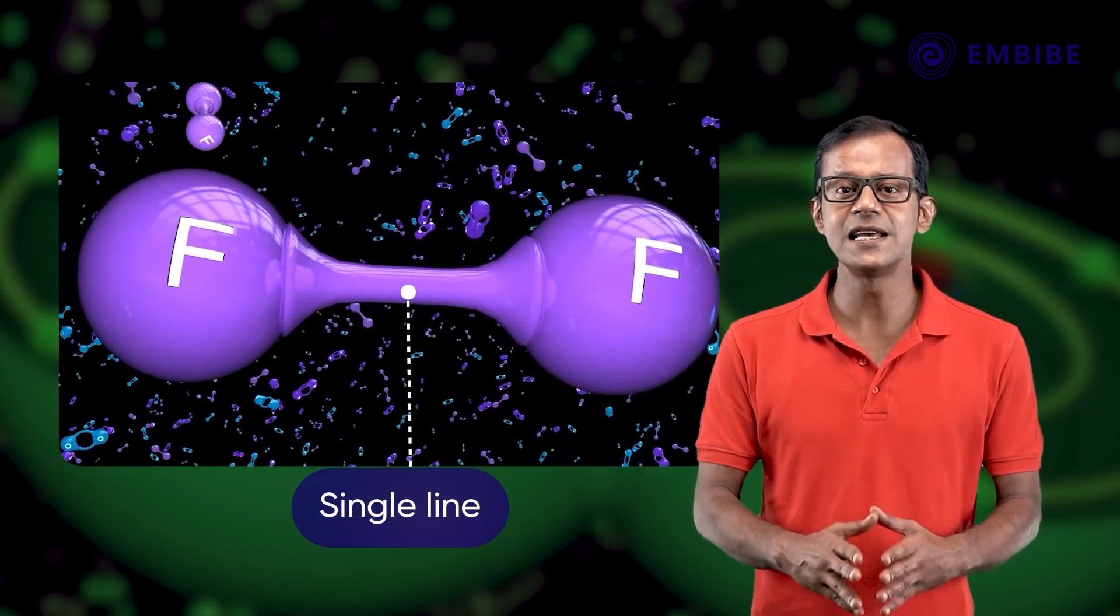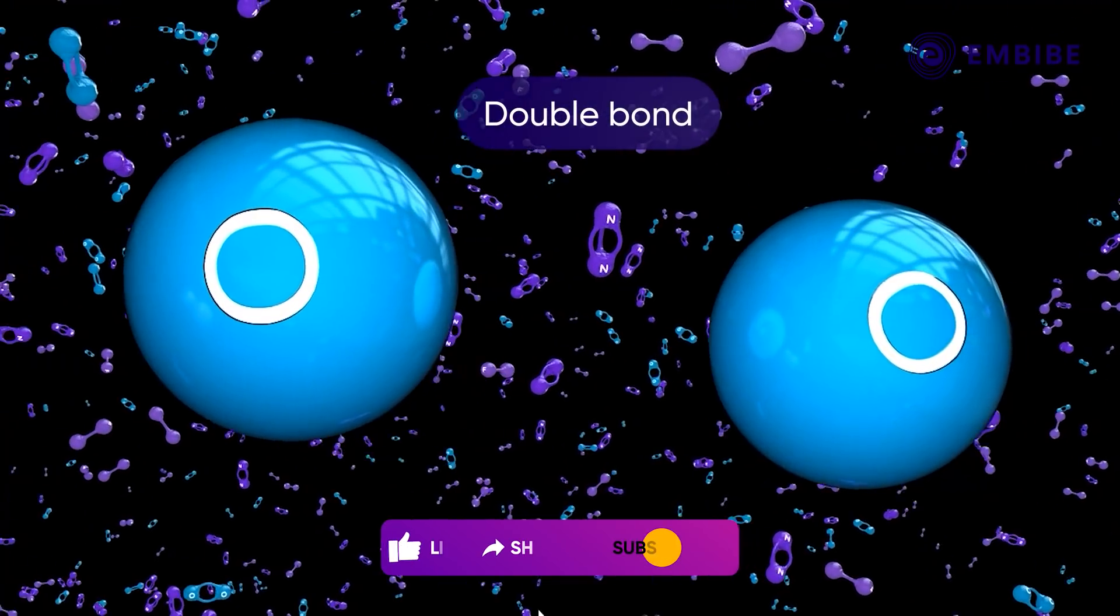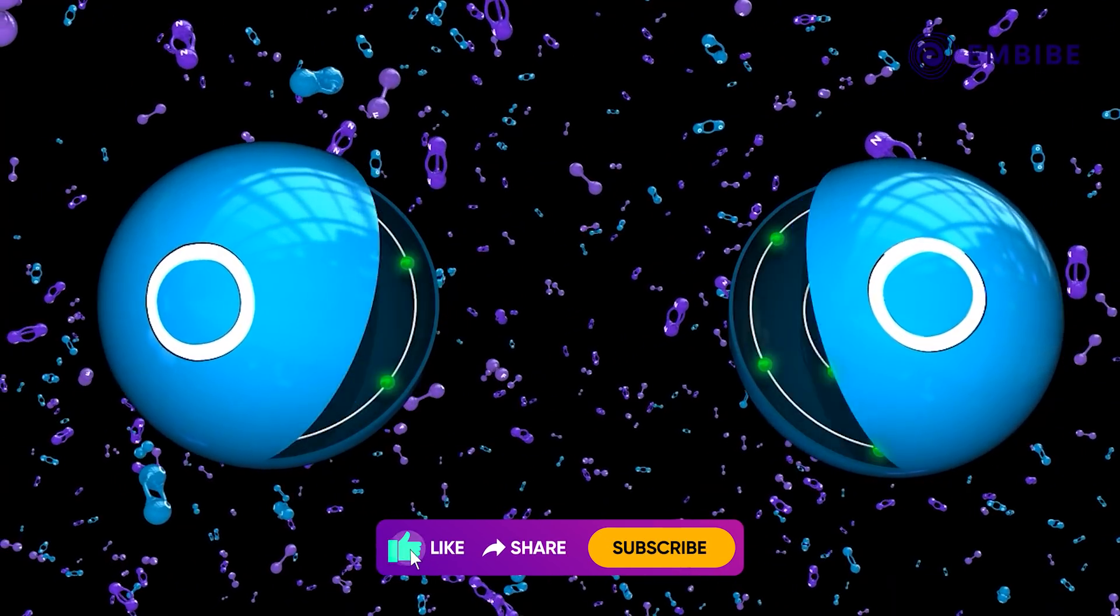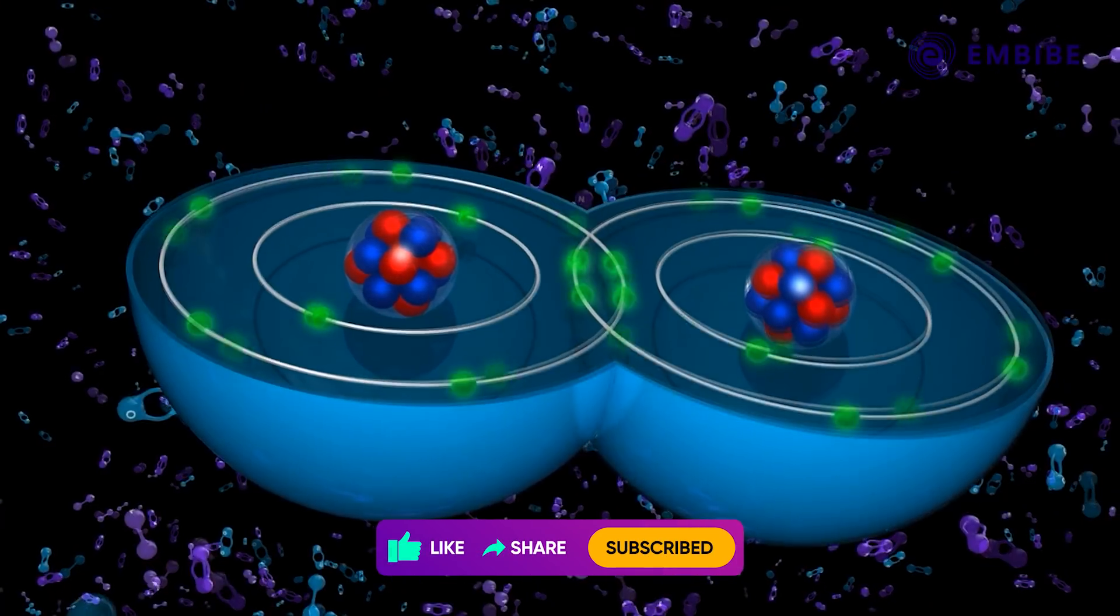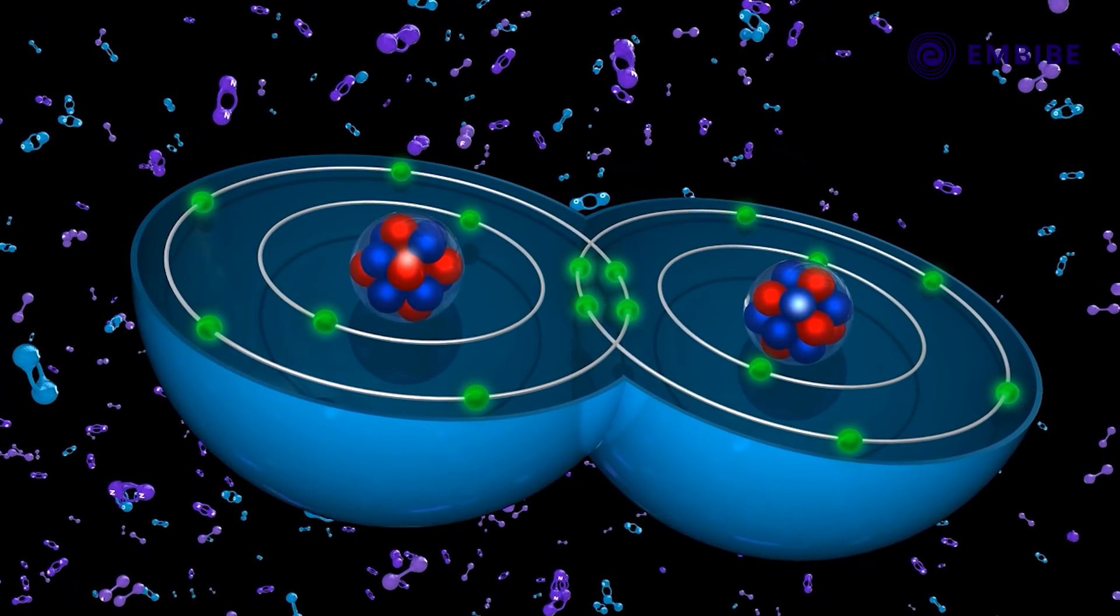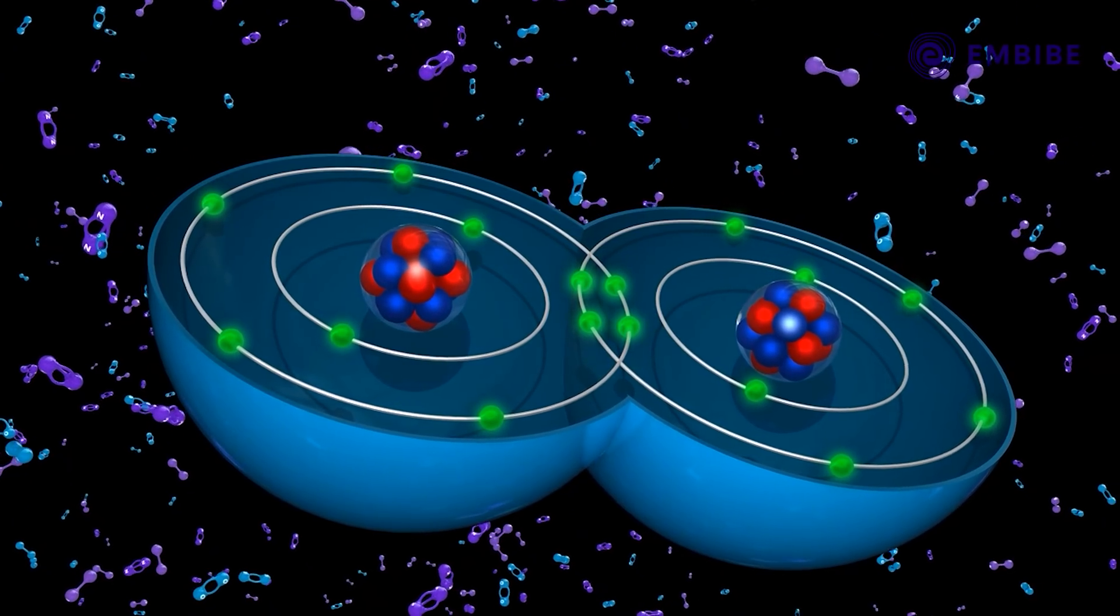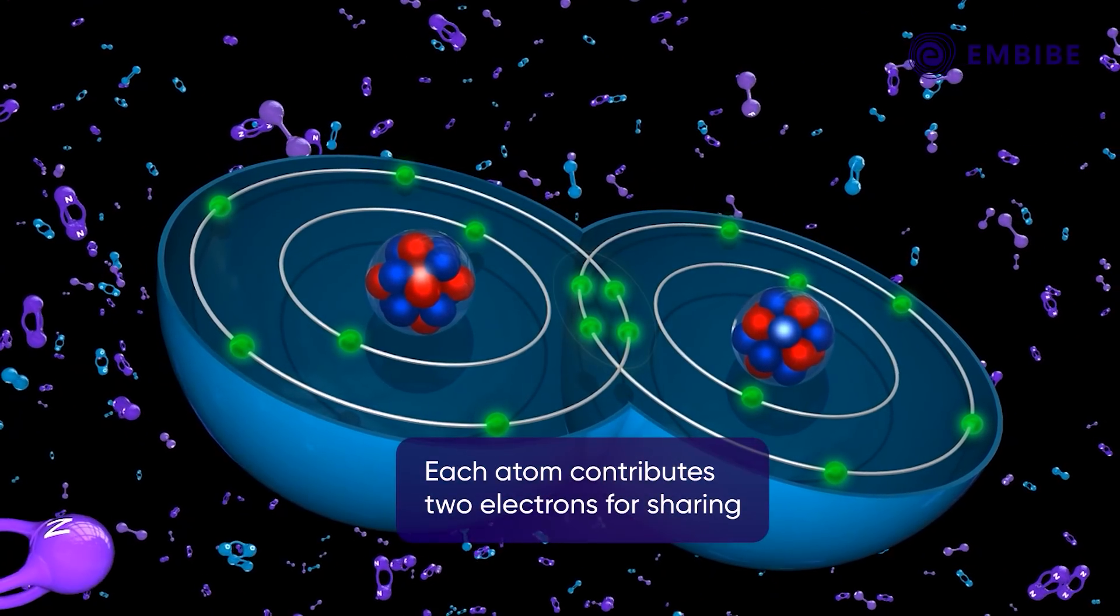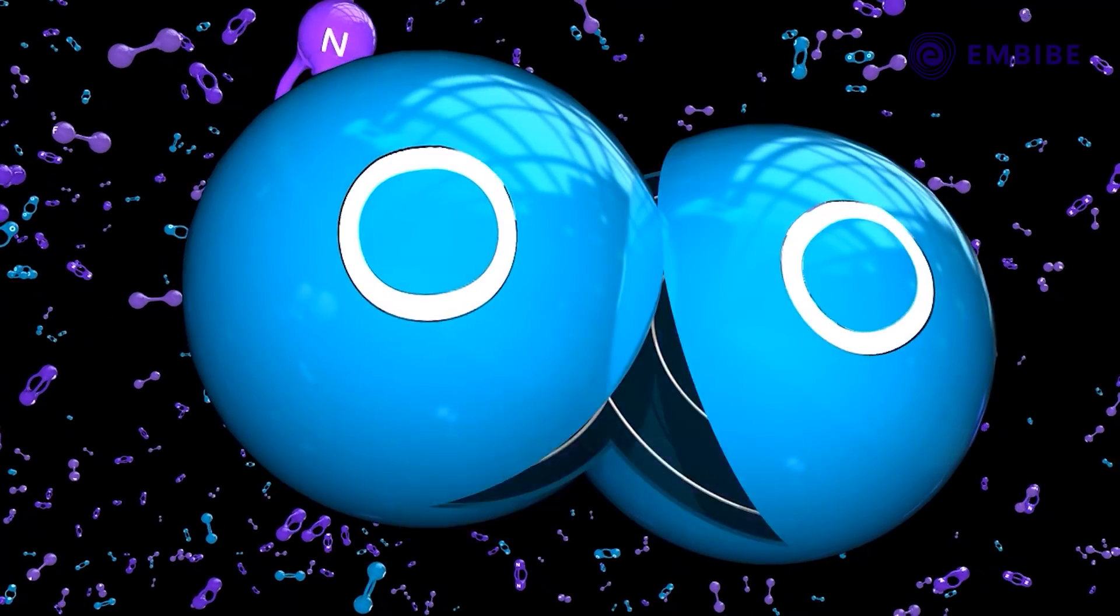Double bond: A double bond consists of two and is formed by the sharing of two electron pairs between two combining atoms. Here, each atom contributes two electrons for sharing. A double bond is denoted by placing two lines between the two atoms.